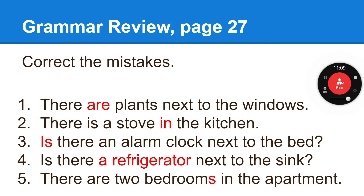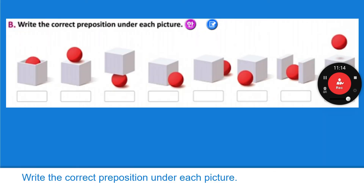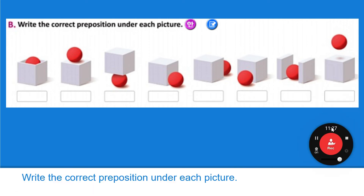Using page 21, write the correct preposition under each picture. Use page 21 to help you. Number one: in. Number two: on. Number three: under. Number four: next to. Number five: behind. Number six: in front of. Number seven: between. Number eight: above.